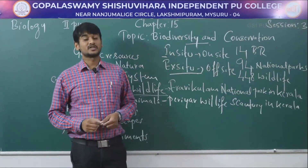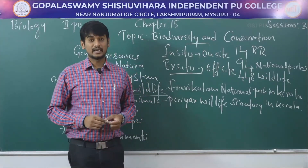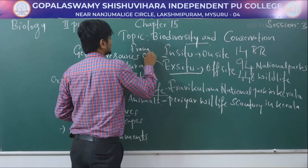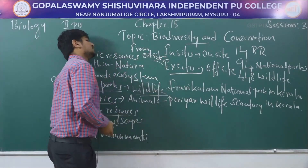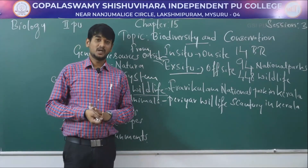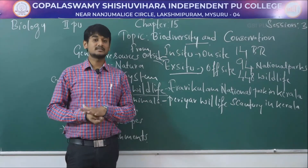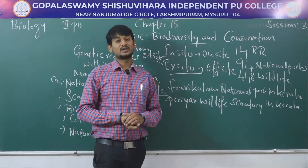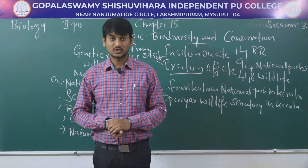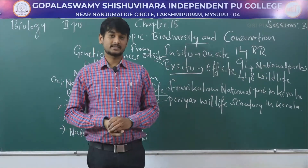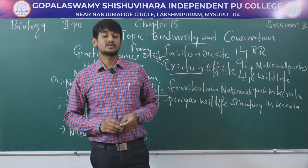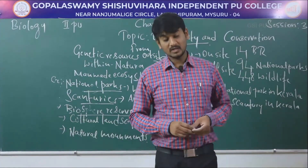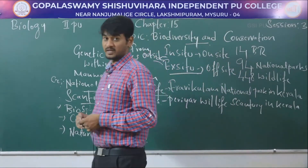The next one is ex-situ conservation. Ex-situ conservation is the conservation of organisms from outside their habitat. For example, plants can be protected in botanical gardens, and animals can be protected in zoo gardens. Examples of ex-situ conservation include genetic resources centers, zoological parks, botanical gardens, cryopreservation, gene banks, and wildlife safaris.